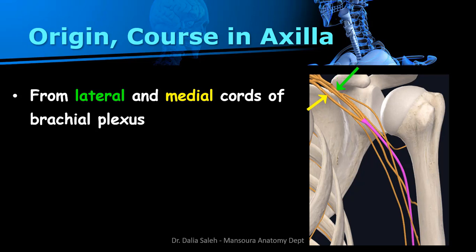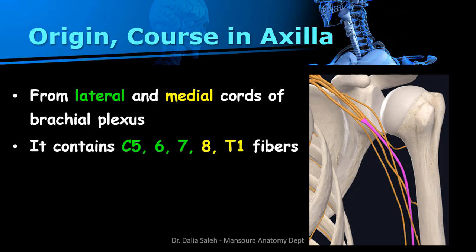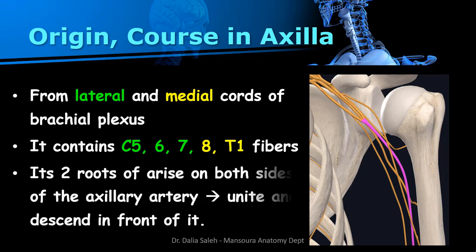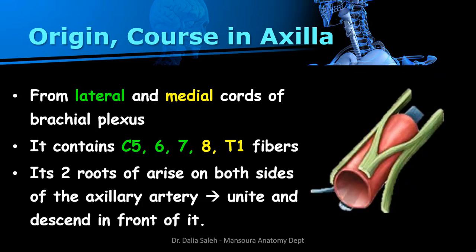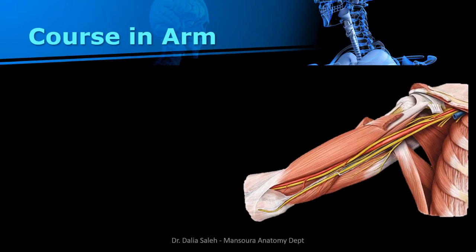The median nerve arises from both the lateral and medial cords of the brachial plexus by two roots. It contains C5 to T1 nerve fibers. Its two roots arise on each side of the axillary artery and then unite together to form the median nerve, which descends in front of the artery.